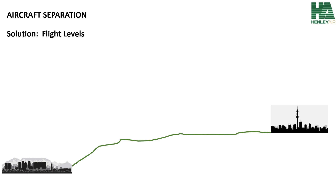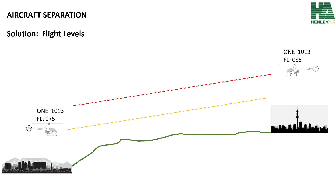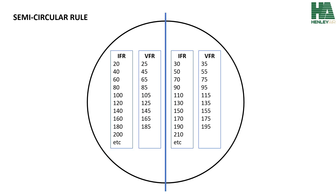The solution to the problem is flying at flight levels. If you both fly on a QNH of 1013, you're basically comparing apples with apples. The Johannesburg aircraft is flying at flight level 085, for example, because he's flying in a southwesterly direction, and the Cape Town aircraft will be flying at 075 in a north-easterly direction. That will ensure aircraft separation, and that is why we need the semi-circular rule.